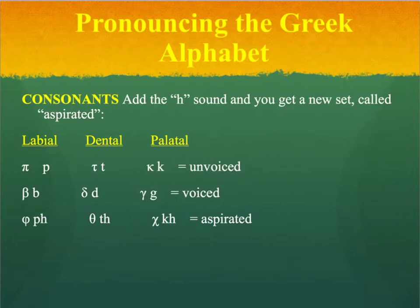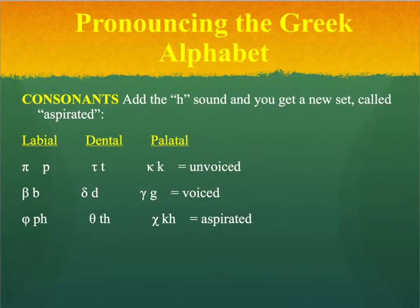We get three more letters by adding an aspiration or an H sound to the consonant. For the labial, that results in the letter Phi; for the dental, the letter Theta; and for the palatal, the letter Chi. Phi and Theta were probably simply the aspirated versions of Pi and Tau, but conventionally we pronounce them as F and TH. So: Phi, Theta, Chi.